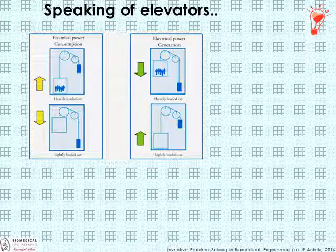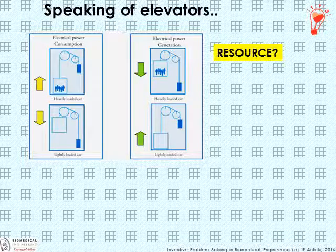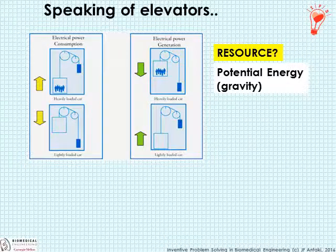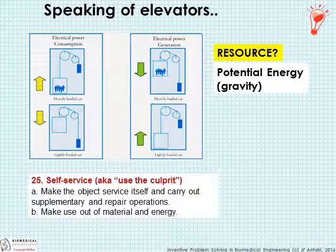One last elevator reference. Here's another interesting innovation: an elevator going up requires electrical power, but on the way down has the potential to actually generate power. In the spirit of inventive problem solving, we recognize there is a resource — the potential energy caused by gravity of lifting that weight into the air. This allows us to apply TRIZ principle number 25, called self-service (also known as 'use the culprit'): make an object service itself and carry out supplementary repair operations, or in this case, make use out of waste material and energy.